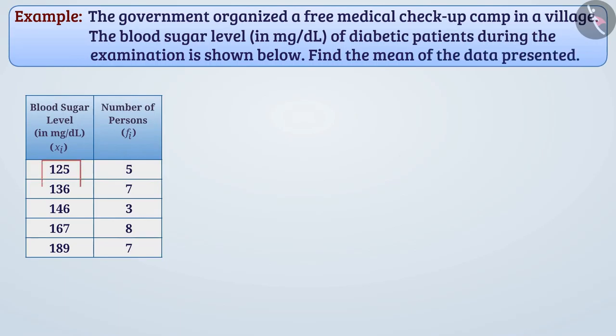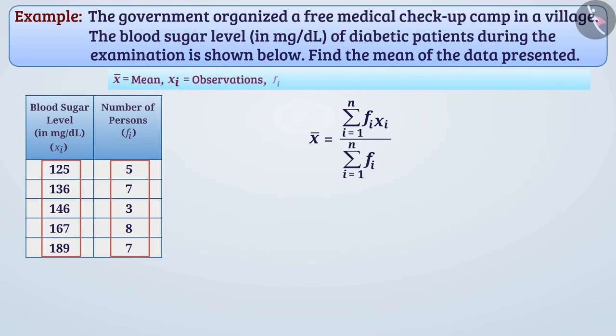Here we are given observations and their frequency, so we should use this formula to get mean. Here x̄ is mean, xi is observations, fi is frequencies, and n is the number of entries in the table.